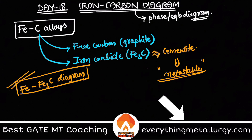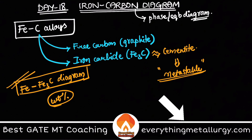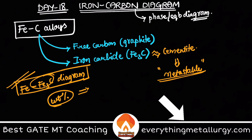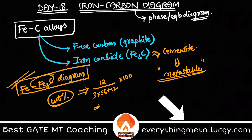In a phase diagram we plot between temperature and composition. We can plot from 0 to 100 percentage of solute, but here we have cementite, so we only plot up to the weight percentage of carbon present in cementite. To calculate it: weight of carbon is 12, divided by the total weight which is 3×56 + 12, multiplied by 100. That gives 12 divided by 180 × 100, which is approximately 6.67 percent.